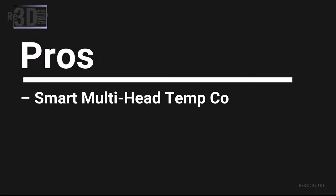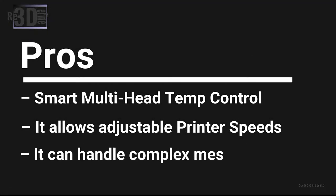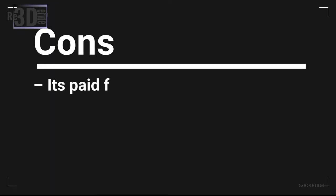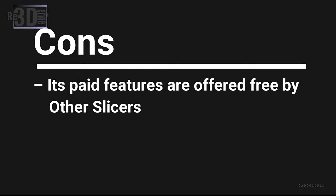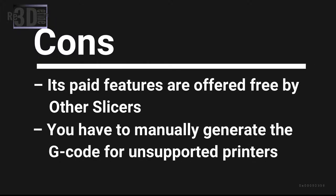Pros: The software provides smart multi-head temperature control. It also allows adjustable printer speeds, and the slicer can handle complex meshes. Cons: Its print features are offered free by other slicing software. Also, you have to manually generate the G-code for unsupported printers.